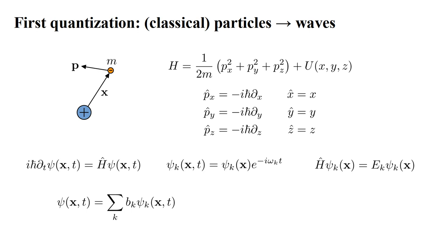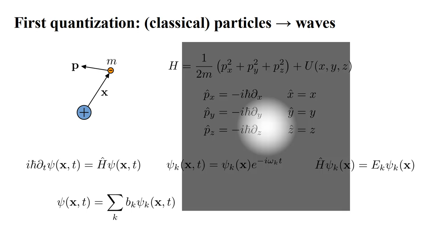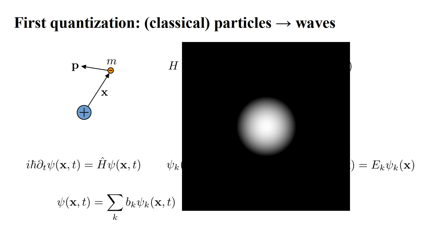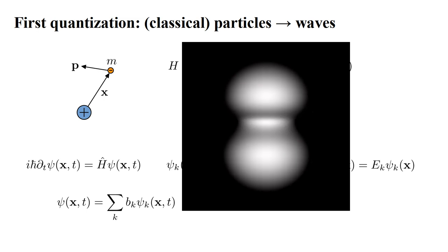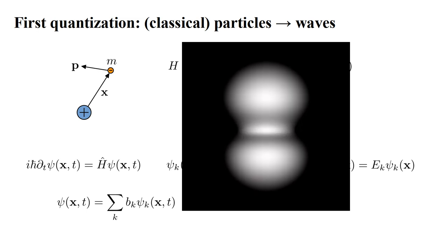More general quantum states can be represented as a superposition of the stationary states, each with some coefficient b_k. The superposition can represent individual stationary states: if b_m equals one and all other b_k's are zero, then the electron is in state m. If b_n equals one and all other b_k's are zero, then the electron is in state n. If both b_m and b_n are non-zero, then the superposition contains different frequency components and the wave function is not stationary, but its magnitude squared varies with time.